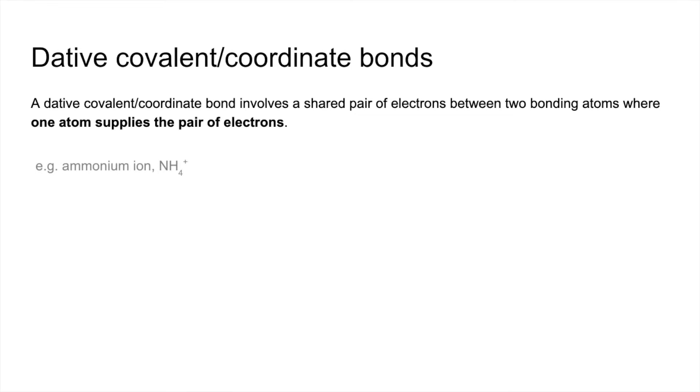Just going to look at one example here, the ammonium ion, NH4 with 1 plus charge. This ammonium ion is actually made from an ammonia molecule and a hydrogen ion. You'll notice the H+ ion has no electrons. So what's going to happen?